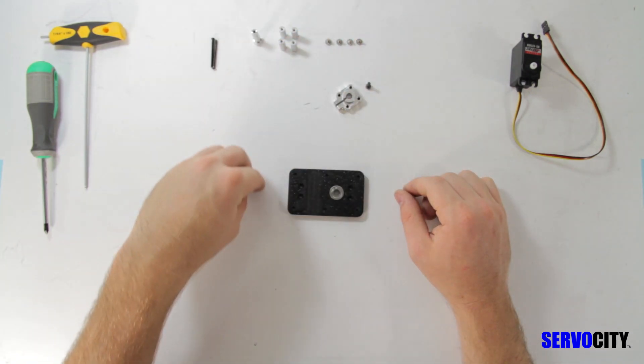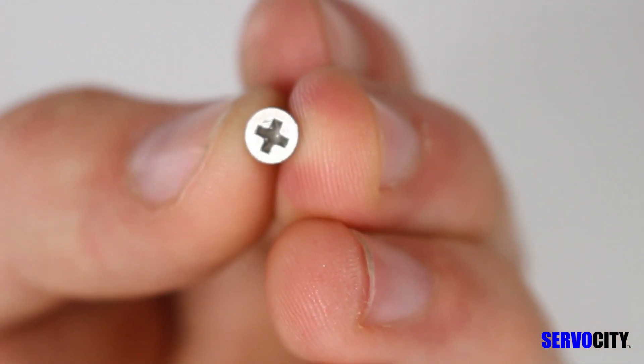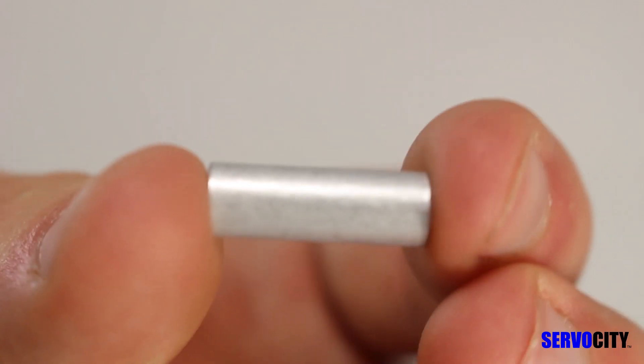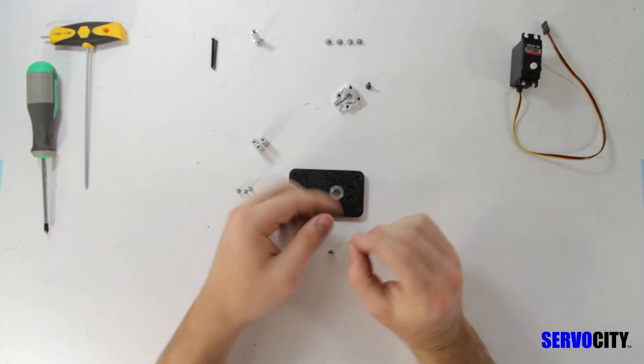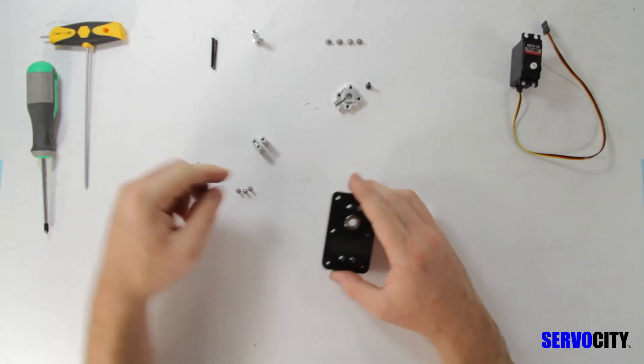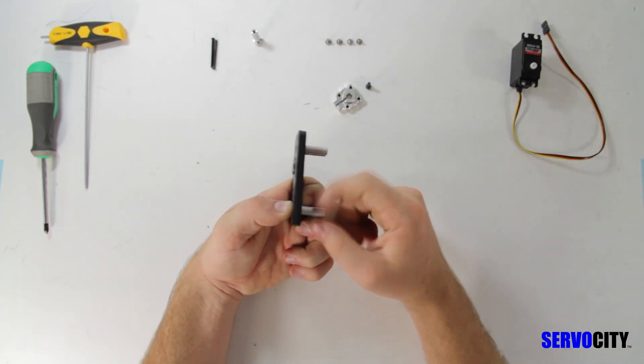Next grab the 4-40 by 3/8 inch flat head machine screws and the 3 1/4 inch round aluminum standoffs. The ABS plate has two sets of holes. Use the set of holes that are countersunk to attach the aluminum standoffs to the smooth side of the ABS plate.